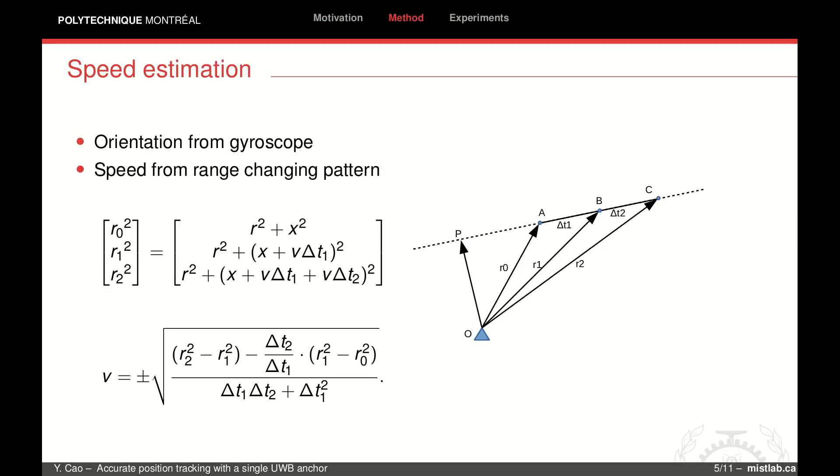We propose a speed estimator to leverage the range-changing patterns. The estimated speed coupled with orientation estimation from the IMU can provide a velocity estimate to keep the system observable. As shown in the figure, three pairs of range and time measurements are used to create a set of equations based on the Pythagorean theorem. Then we can get the algebraic solution of the moving speed V.